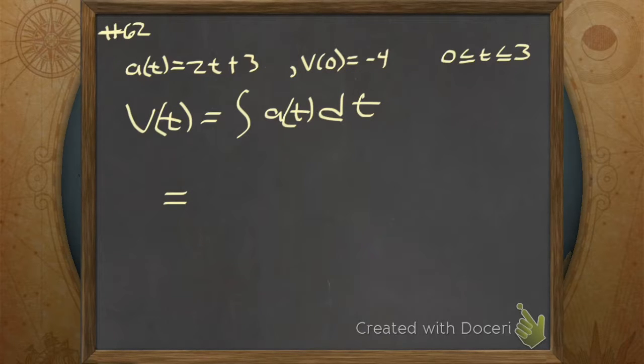Let's integrate our a(t). We're integrating 2t plus 3 dt. So then we integrate and our v(t) is add 1 divide by it, t squared plus 3t plus C.